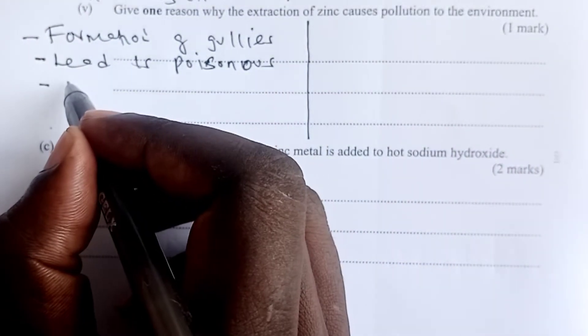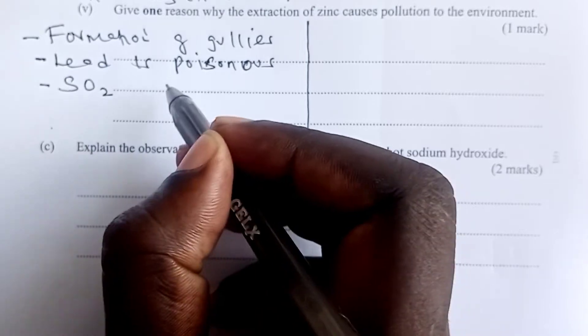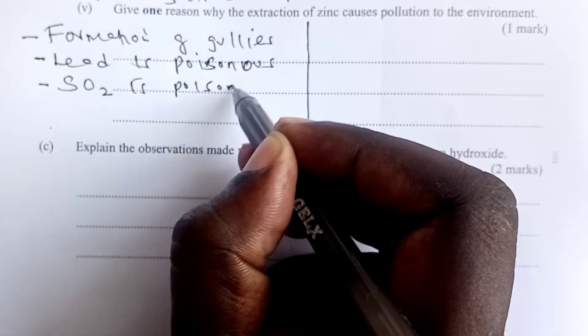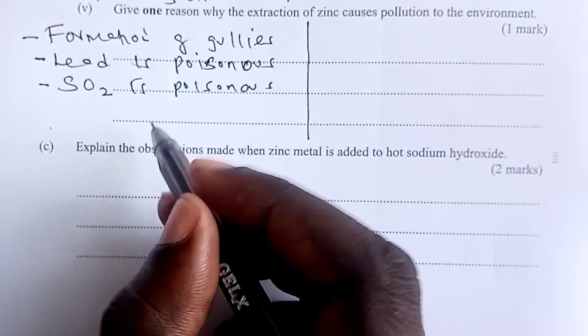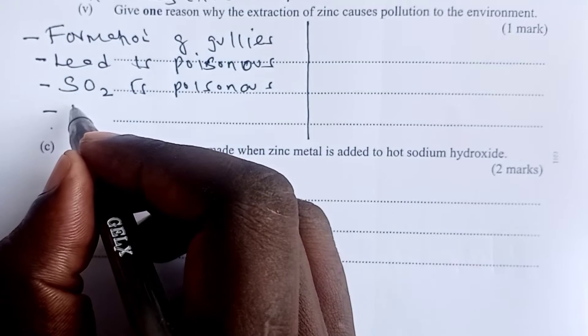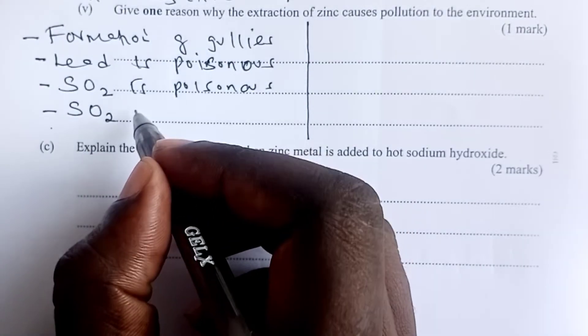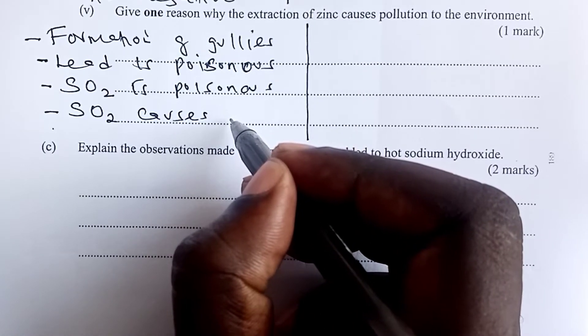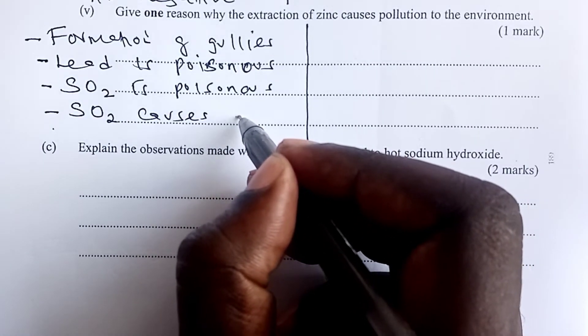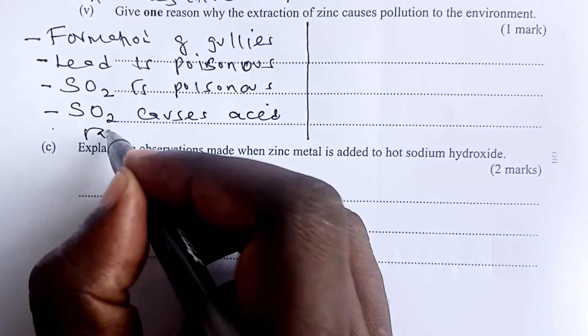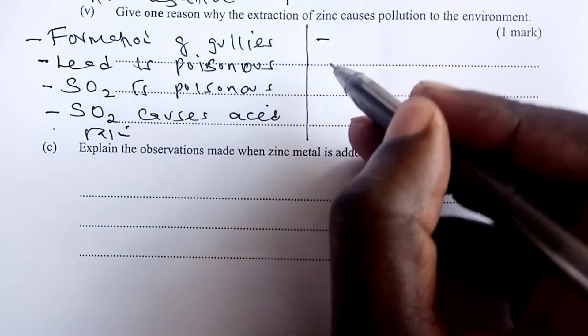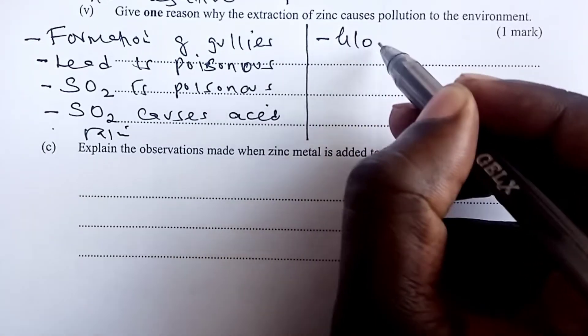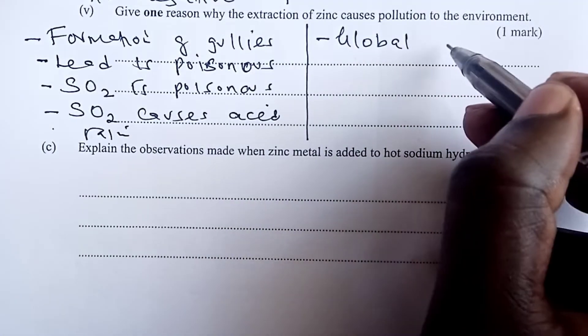We also obtain sulfur-4-oxide gas from the process. And we know sulfur-4-oxide is also another very poisonous gas. And on the same breath, sulfur-4-oxide is also a causing agent to acid rain. And this acid rain, we actually understand its effects in the environment.